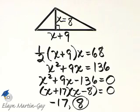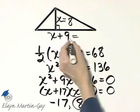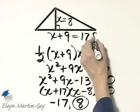Let's see, we're in feet here, so the altitude is 8 feet. What is the length of the base? 8 plus 9, or 17 feet.